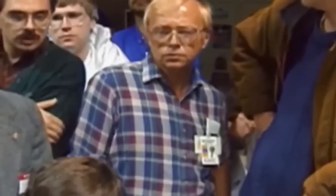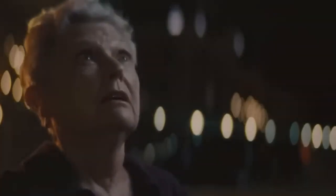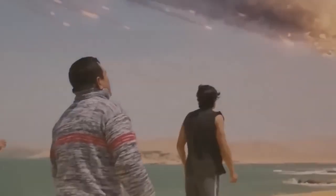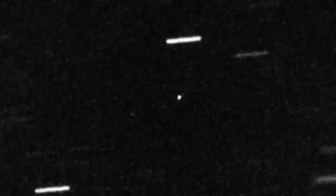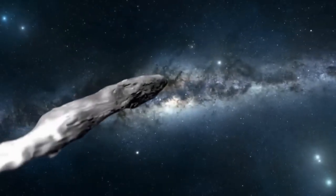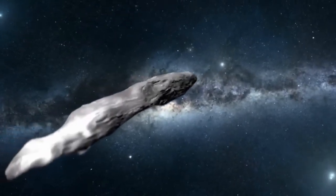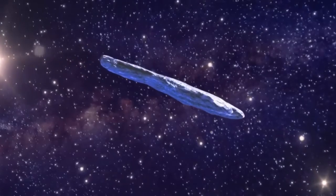Initially classified as an asteroid due to its rocky appearance and behavior, Oumuamua quickly proved to be something entirely different. It defied expectations by suddenly altering its trajectory, behavior not typical of asteroids. This raised numerous questions about its composition and origin. Was it a comet that had lost its volatile materials after traveling through space for millions of years, or was it something even more exotic?